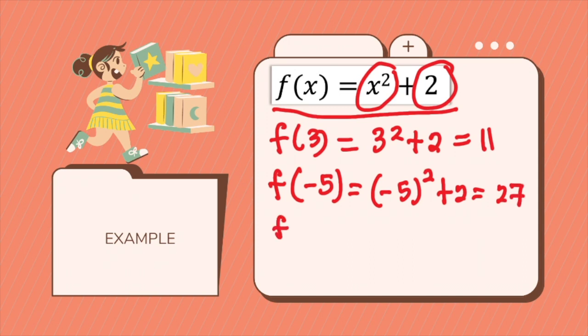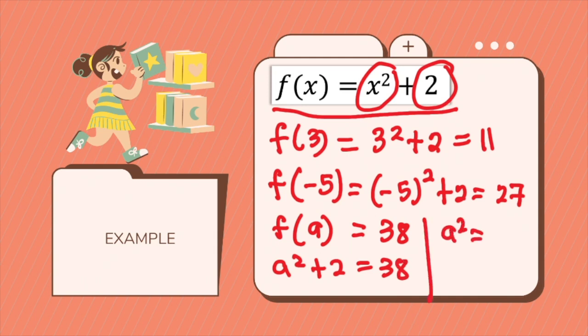If the input was a and this equals 38, so what would a mean? That means that you have an input of a and it will give you 38 as an output. So you just need to substitute x with a. So that's a squared plus 2 equals 38. So you will have a squared equals 38 minus 2. That will be 36. Therefore, a will be the square root of 36, which is plus or minus 6.